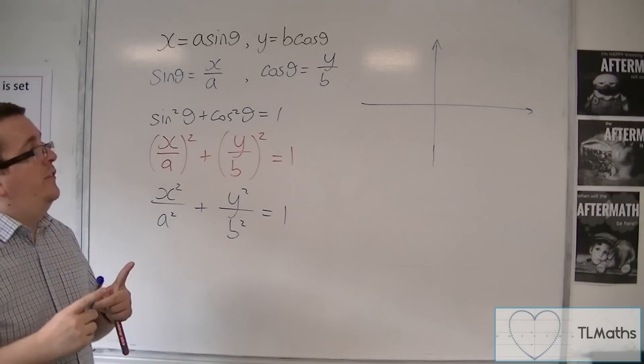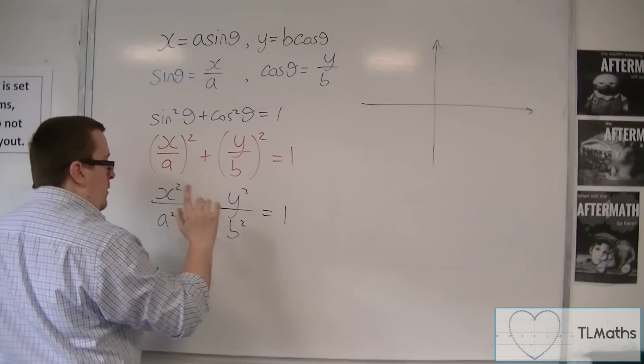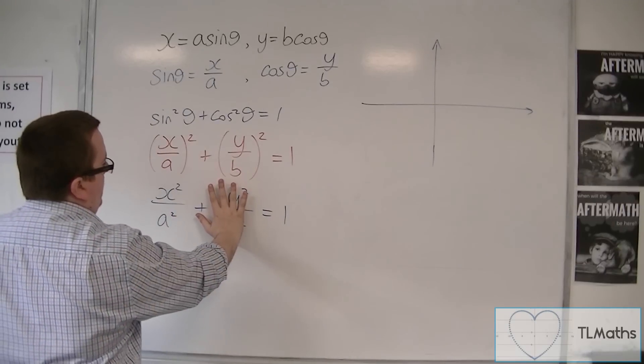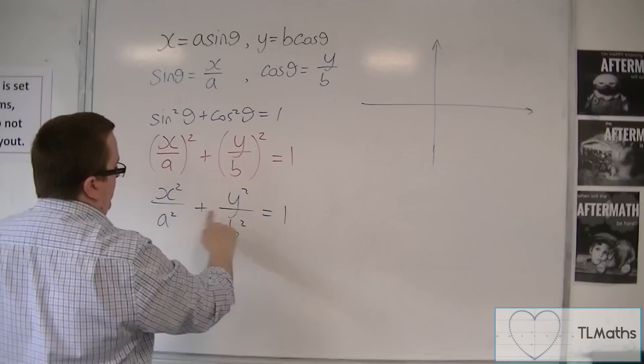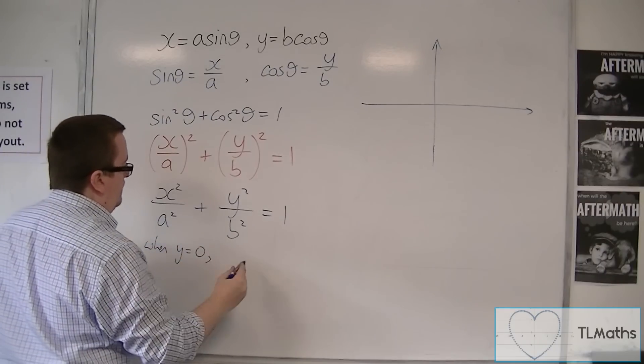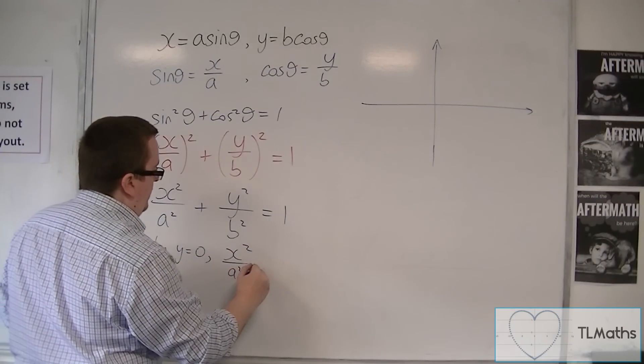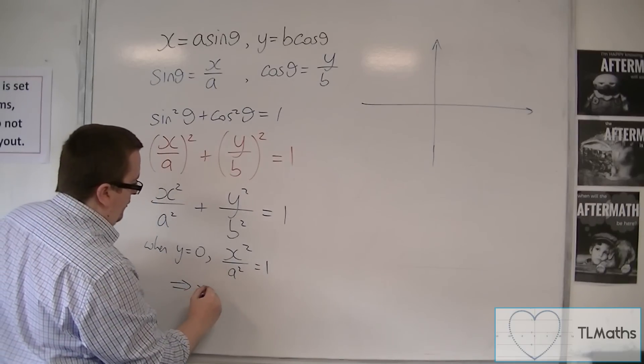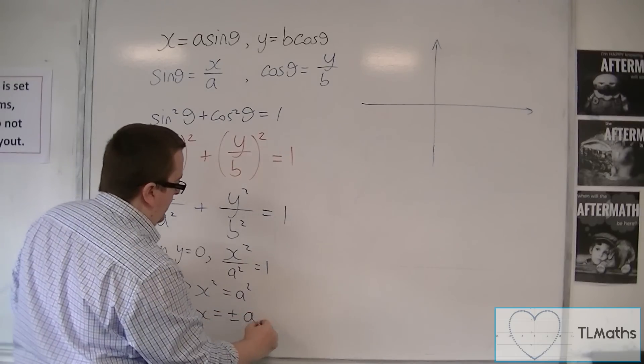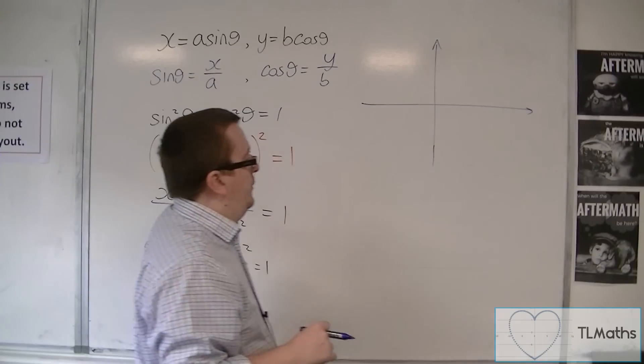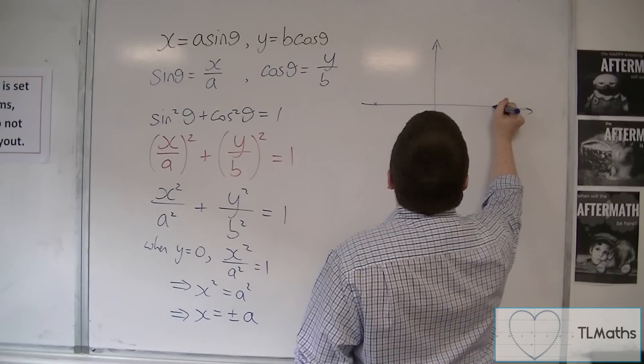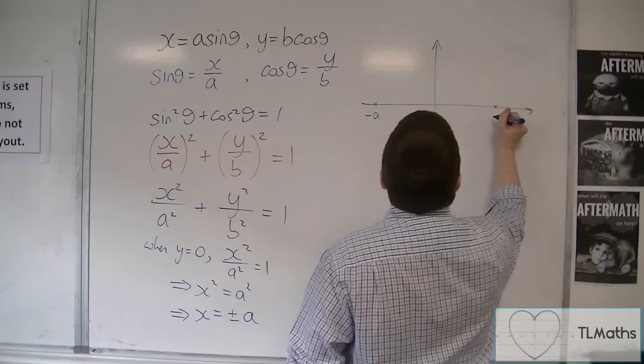So it crosses the X axis when Y is 0. If Y is 0, that fraction disappears, and I'll be left with X squared over A squared equals 1, so X squared equals A squared, and X could be plus or minus A. So it crosses the X axis at minus A and positive A.